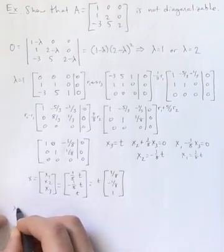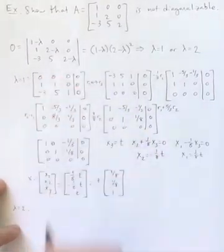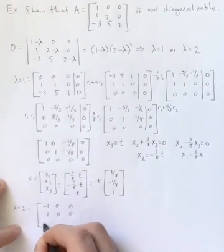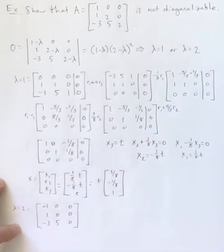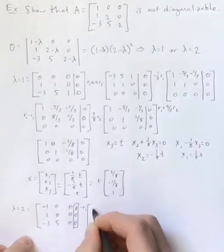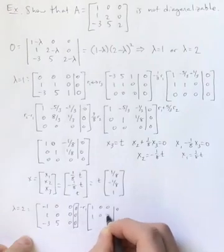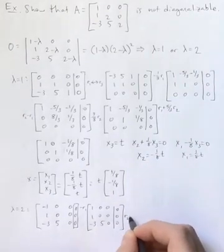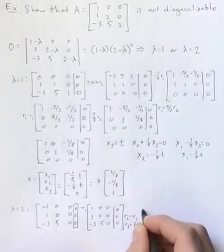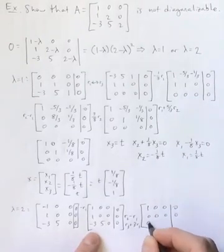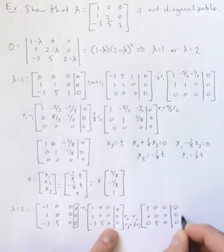Let's go ahead and do the same thing for lambda equals 2. So if I put in a 2 right up here, I'll get negative 1, 0, 0, 1, 0, 0, and negative 3, 5, 0. I forgot to augment that with zeros. Remember, we're solving the homogeneous system. I can just go ahead and change the sign on the first row. That's pretty easy. And then I can do row 2 minus row 1 and row 3 plus 3 row 1. So this will be the same. The second one will be a row of all zeros. And then this will be 0, 5, 0, 0.